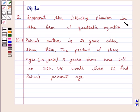Represent the following situation in the form of a quadratic equation. Rohan's mother is 26 years older than him. The product of their ages 3 years from now will be 360. We would like to find Rohan's present age.